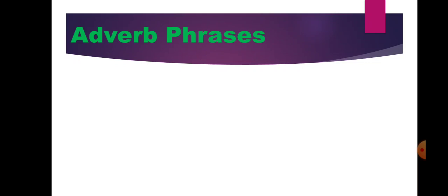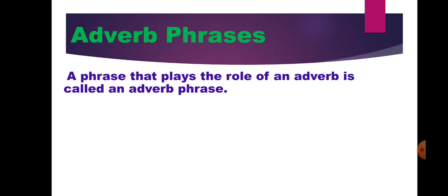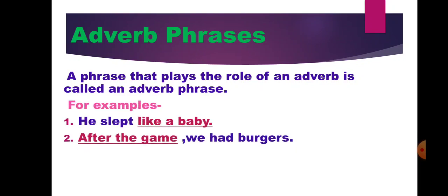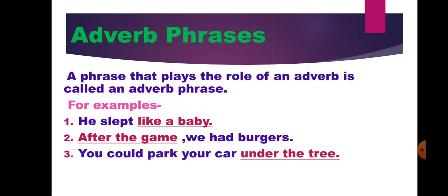Next is adverb phrases. A phrase that plays the role of an adverb is called an adverb phrase. An adverb phrase has an adverb as its head word and it modifies the verb in a sentence. As we know, adverbs tell us how the action is done, where the action is done, and when the action is done. Examples: 'He slept like a baby.' 'After the game we had burgers.' 'You could park your car under the tree.' The underlined phrases — like a baby tells us how the action is done; after the game tells us when the action is done; under the tree tells us where the action is done. These groups of words are adverb phrases.